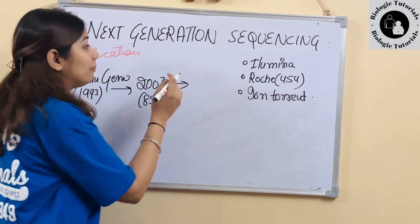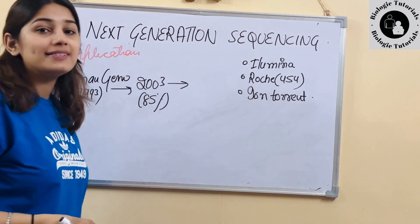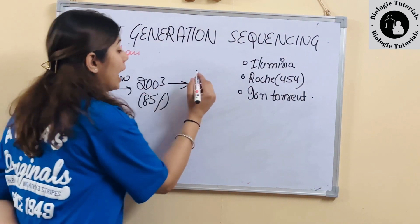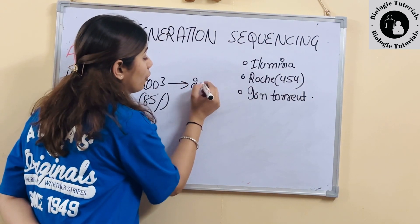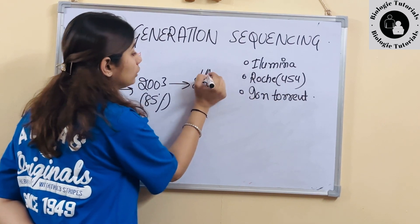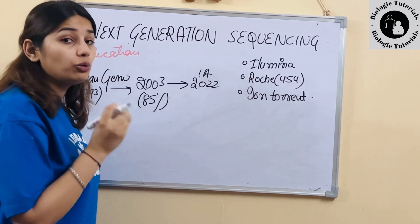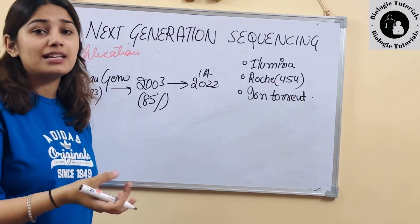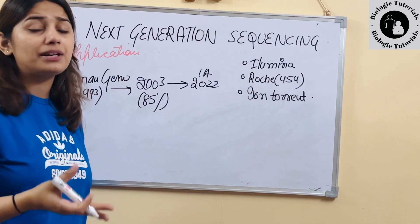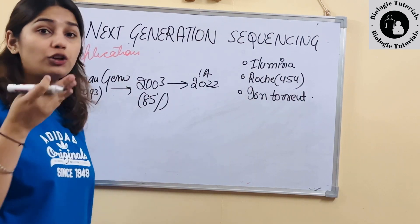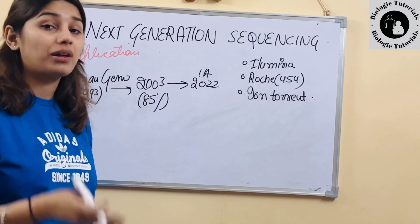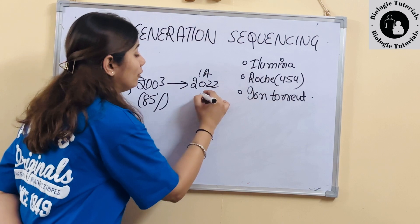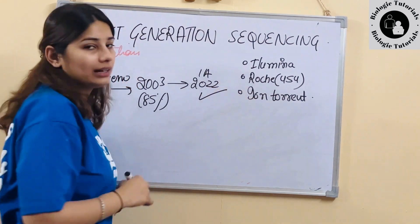Aur recently, with the help of advanced sequencing technologies, humne April 2022 mein jo rest 8 percent ya 9 percent — jo bhi humara Human Genome Project ki sequencing incomplete thi — woh humne poori kar di.